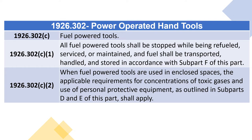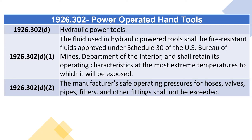1926.302(c)(2): When fuel powered tools are used in enclosed spaces, the applicable requirements for concentrations of toxic gases and use of personal protective equipment as outlined in subparts D and E of this part shall apply. 1926.302(d) Hydraulic Power Tools. 1926.302(d)(1): The fluid used in hydraulic powered tools shall be fire resistant fluids approved under Schedule 30 of the U.S. Bureau of Mines, Department of the Interior, and shall retain its operating characteristics at the most extreme temperatures to which it will be exposed.